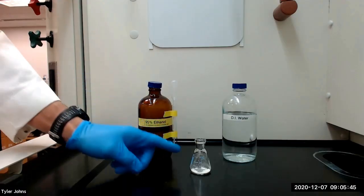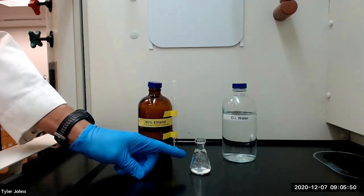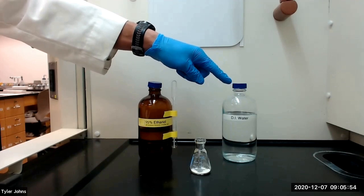After adding the thiamine hydrochloride to the Erlenmeyer flask, we will next dissolve the thiamine hydrochloride using 0.45 milliliters of deionized water.